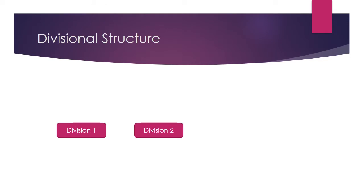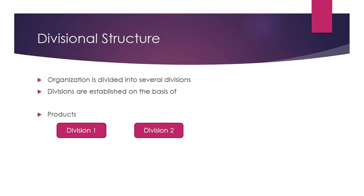In divisional structure, we already know that the organization is divided into several divisions. Now there should be some basis on which the organization is divided into divisions. One of the bases is products. For example, if an organization has two divisions on the basis of product, each division will be dealing with an individual product autonomously.